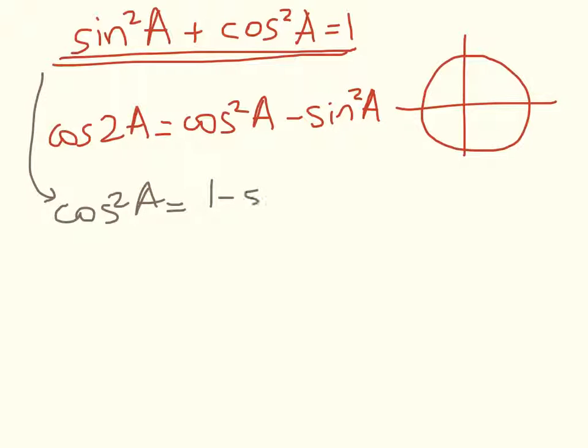The first thing we can say is that cos squared of A is the same as 1 minus sin squared of A. Similarly, we can say that sin squared of A is equal to 1 minus cos squared of A. Now, if we substitute each of those expressions in turn into my double-angle formulae, we get some nice results.